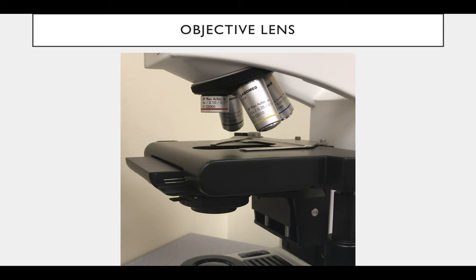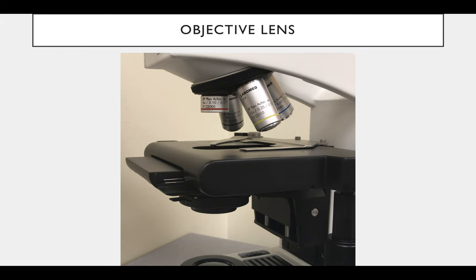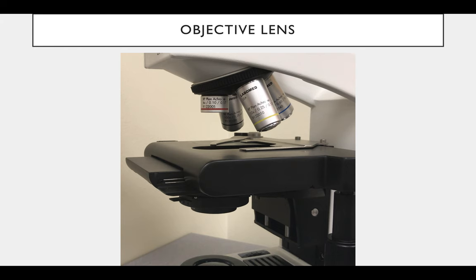That's all in addition to the ocular lenses, which magnify an object an extra ten times. So all together, that would be four times the ten from the ocular lens — so that's 40 times magnification. Ten times another ten from the ocular lens — that's 100 times magnification.